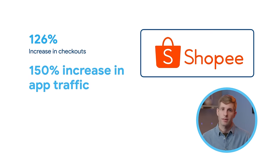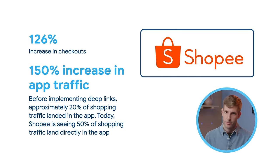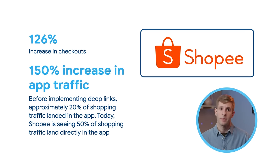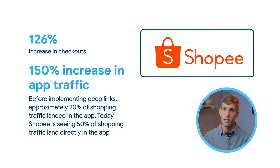Now let's see what deep linking has done for some real world apps using Flutter. Shopee, the leading e-commerce platform in Southeast Asia and Taiwan, realized that their app traffic converted 20 times better than on the web and decided to prioritize ways to make it easy for customers to shop in app. To deliver a frictionless experience across their mobile site and app, the marketing and product teams aligned on implementing deep links and saw amazing results. Before implementing deep links, approximately 20% of shopping traffic landed in the app. Today, Shopee is seeing 50% of shopping traffic land directly in the app, which represents a staggering 126% increase in checkouts.